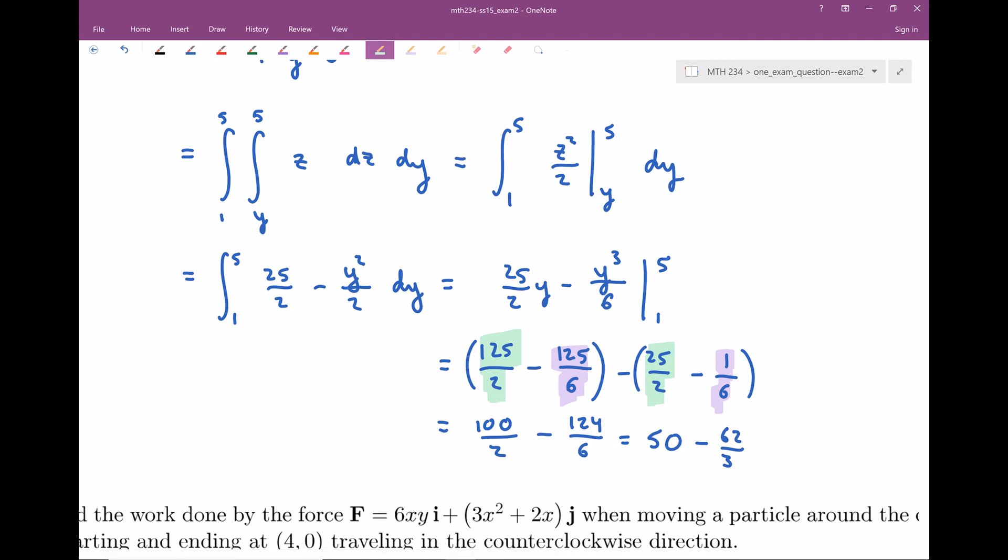If you'd like to, you can simplify even farther, but this is where I'm gonna leave our final answer: 50 minus 62 thirds. This is gonna be close to - 60 thirds would be around 20. So 50 minus 20, the answer's around 30. That's it for this problem. I hope you guys enjoyed it. I'll see you next time.